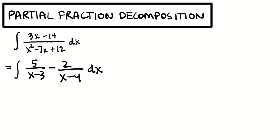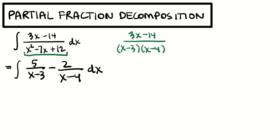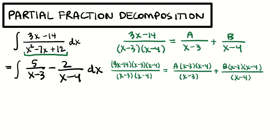You're going to look at this integrand, look at the denominator, and say: hey, this is something I know how to factor. I can break that up into x minus 3 and x minus 4. So I'm going to say 3x minus 14 divided by (x minus 3)(x minus 4) can be split into the sum of two fractions: some number A divided by x minus 3, plus some other number B divided by x minus 4. We're going to multiply both sides of this equation by both x minus 3 and x minus 4, and a lot of this stuff will cancel off.